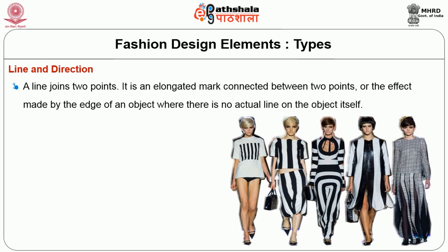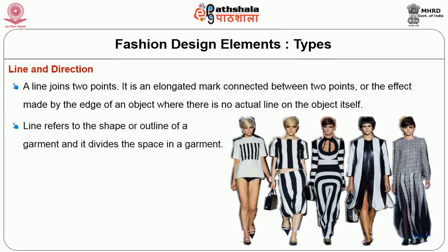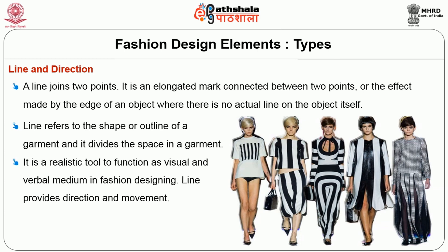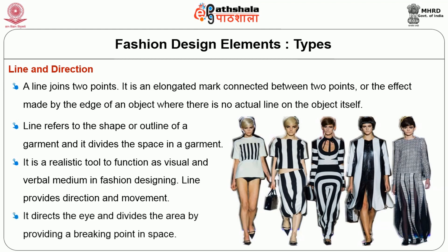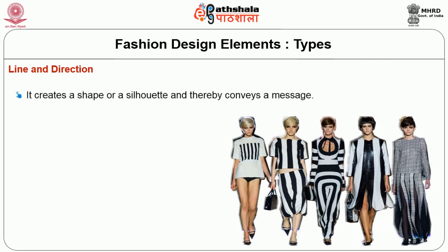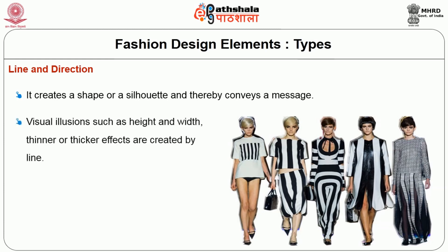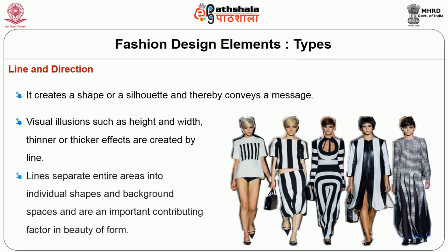Line and direction. A line has two points. It is an elongated mark connected between two points, or the effect made by the edge of an object where there is no actual line on the object itself. Line refers to the shape or outline of a garment and divides the space in a garment. It is a realistic tool to function as visual and verbal medium in fashion designing. Line provides direction and movement. It directs the eye and divides the area by providing a breaking point in space. It creates a shape or a silhouette and thereby conveys a message. Visual illusions such as height and width, thinner or thicker effects are created by line. Lines separate entire areas into individual shapes and background spaces and are an important contributing factor in the beauty of form.